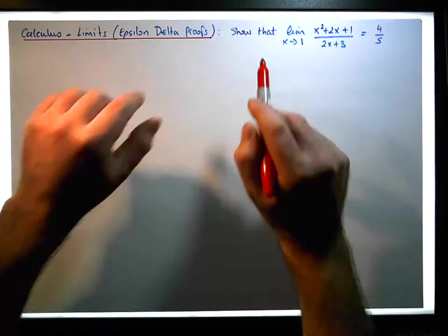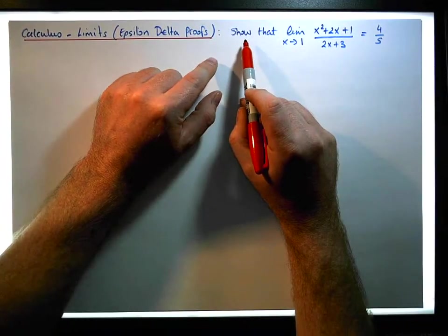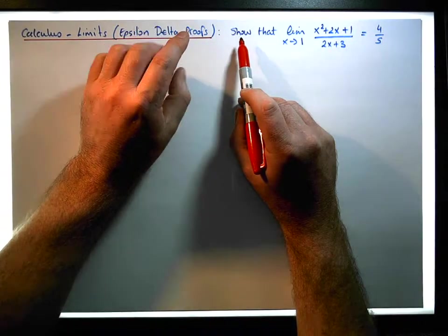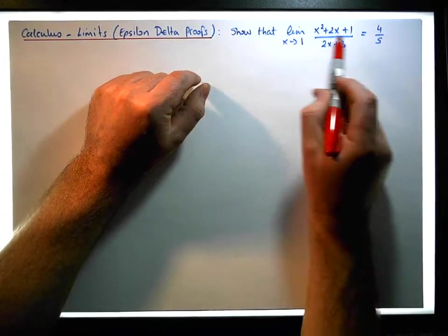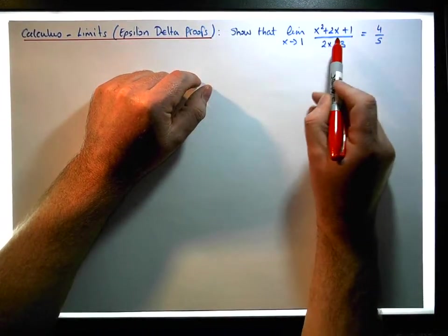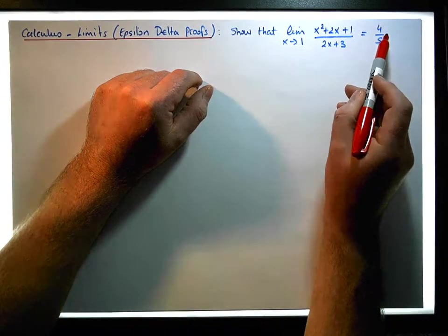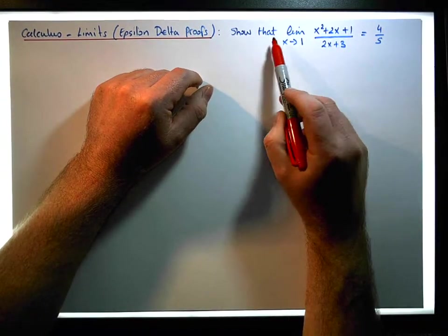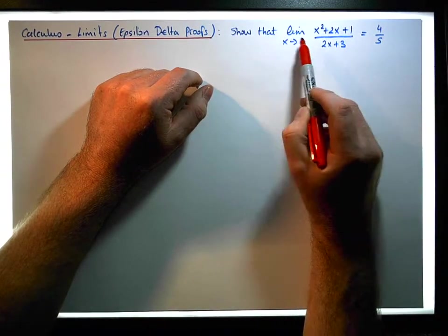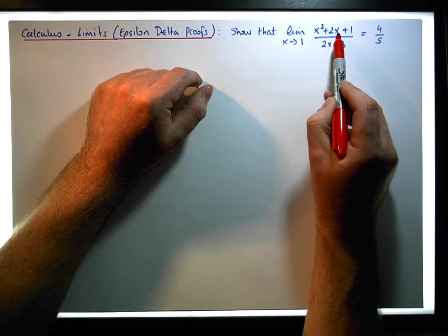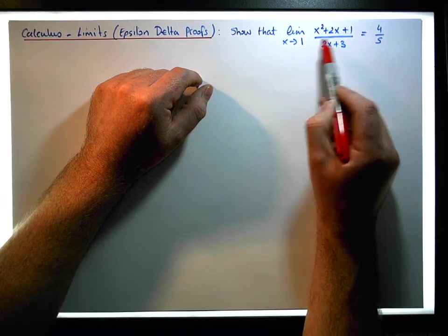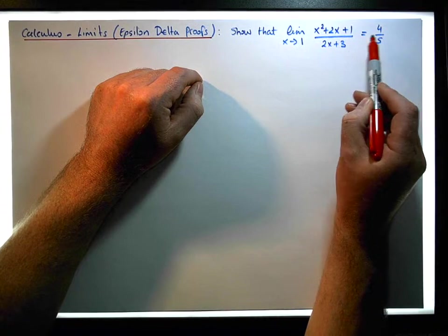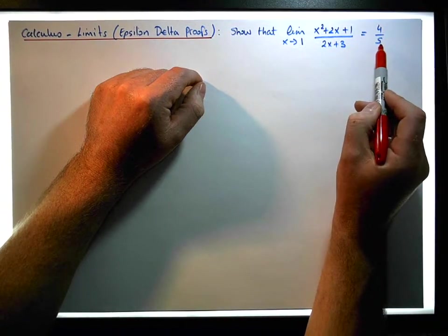We'd like to use an epsilon-delta proof to prove that the limit of a rational function is actually equal to a specific value. In this case, we'd like to show that the limit of x squared plus 2x plus 1 over 2x plus 3, as x tends to 1, is in fact equal to 4 over 5.